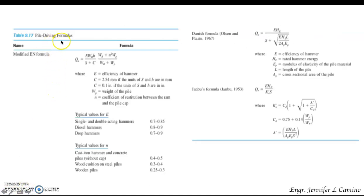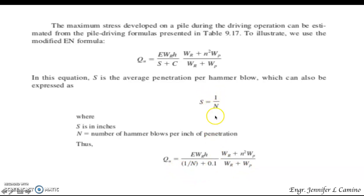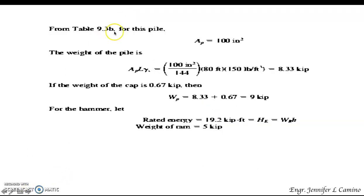The table shows various pile driving formulas including the modified EN formula, the Danish formula, and the Jambu formula. The maximum stress developed in a pile during driving can be estimated from these formulas in table 9.17. In the modified EN formula, s (average penetration per blow) can also be expressed as 1/n, where n is the number of blows per inch of penetration. Thus Q_u is obtained by substituting this value for s.